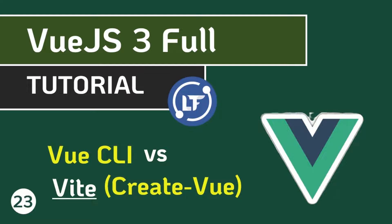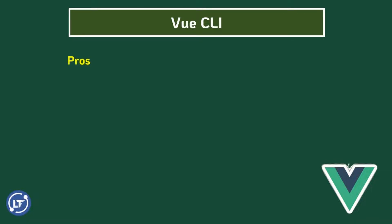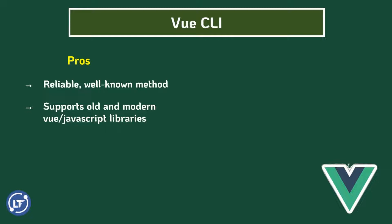Let's get started. First, let's look at the Vue CLI. Number one: it is a reliable and well-known method. You can use the Vue CLI to create your Vue app — everyone knows it, it's the well-known and reliable way of creating our Vue app. Secondly, the Vue CLI supports old and modern Vue or JavaScript libraries and can also bundle any kind of dependencies.